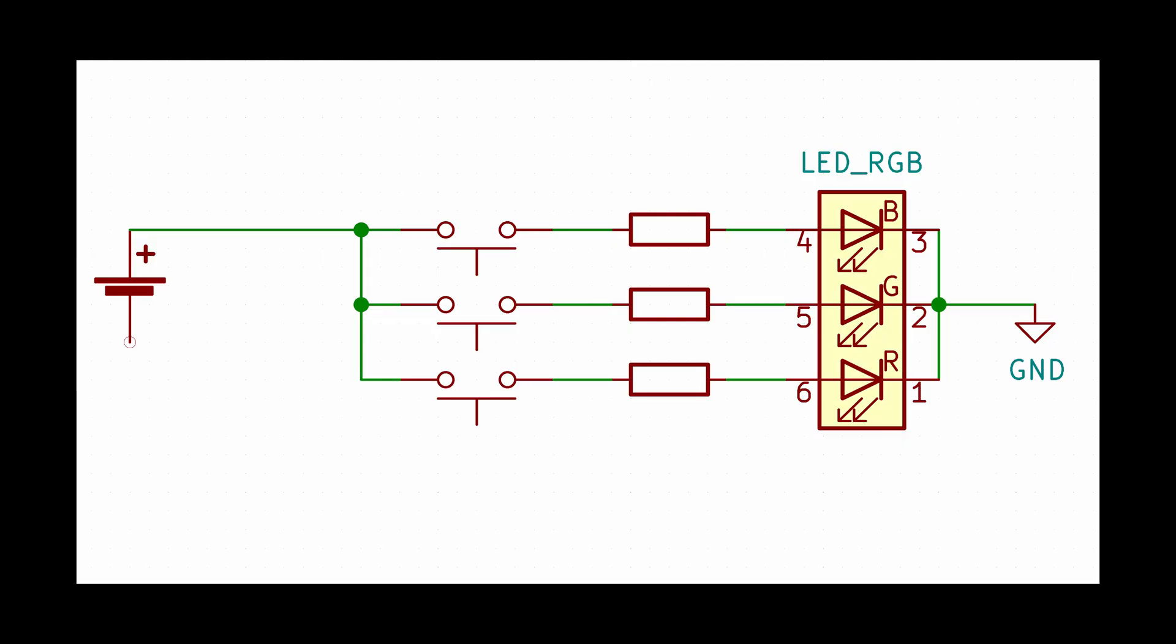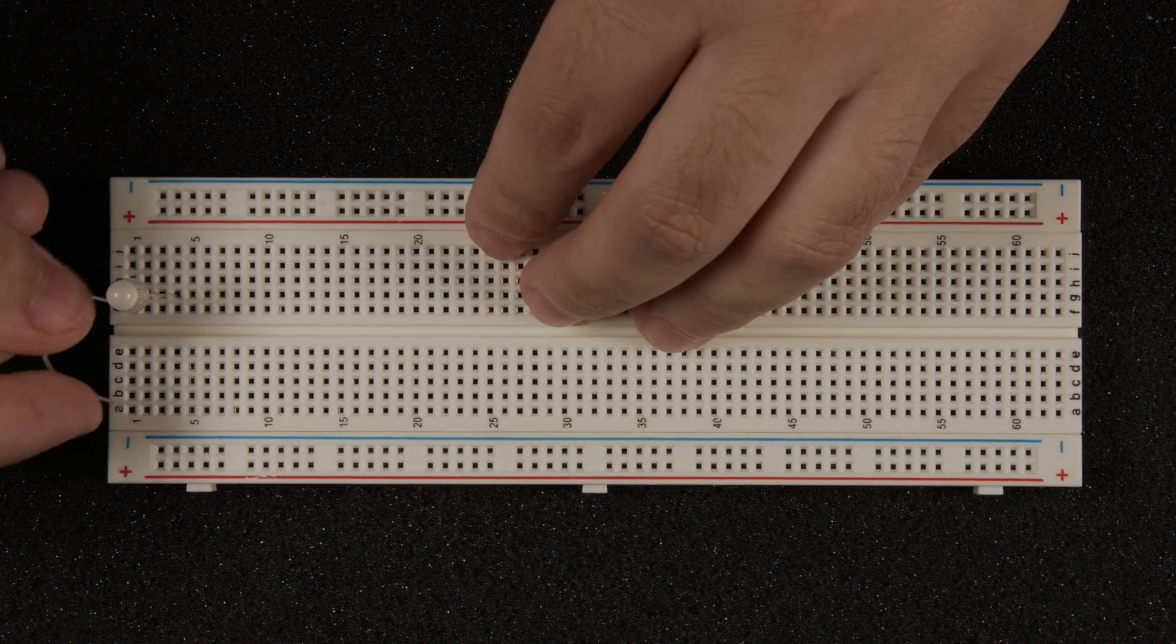Let's start by building a simple circuit that lights up an RGB LED when we press a button. First, let's get the various components inserted into the breadboard.